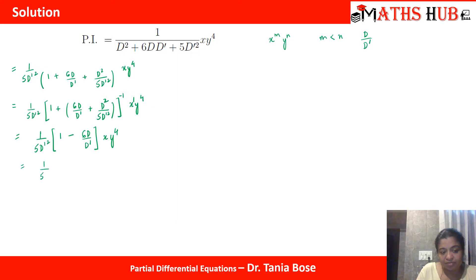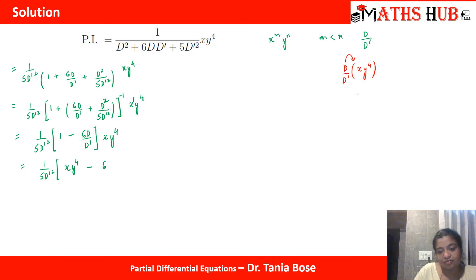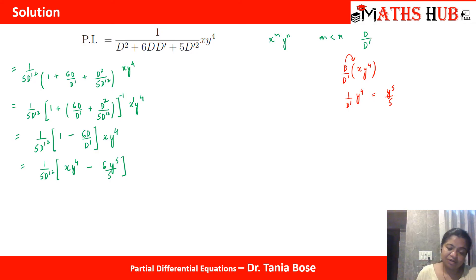Opening the inner bracket: 1 · x·y⁴ = x·y⁴. For the second term, 6 is constant; we compute D/D' of x·y⁴ — D differentiates with respect to x giving y⁴, and 1/D' integrates with respect to y giving y⁵/5. So that term becomes 6·(y⁵/5) = 6y⁵/5. We still have 1/D'² remaining in the denominator.